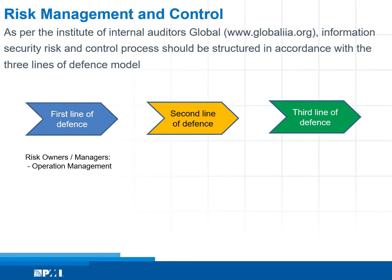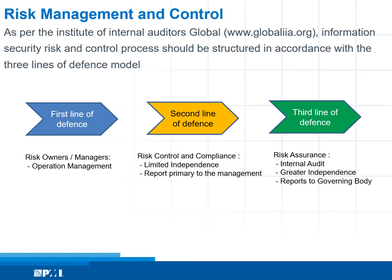The second line of defense refers to risk control or compliance. This function has limited independence and reports primarily to management. The third line of defense refers to risk assurance — typically internal auditors — which has greater independence and reports to the governing body.